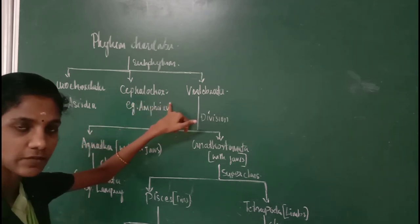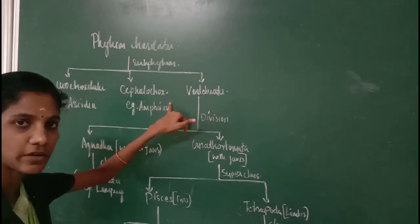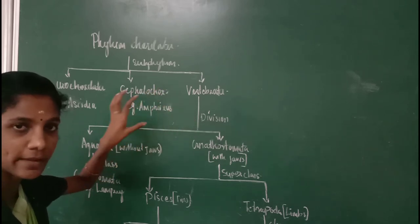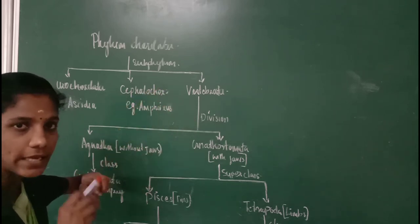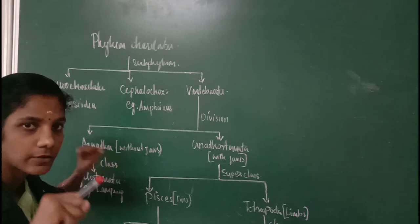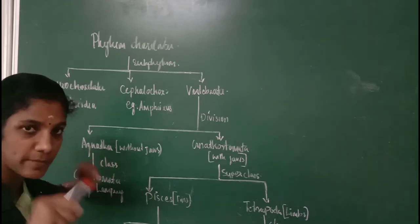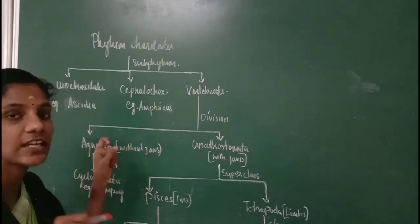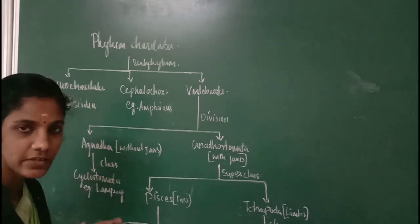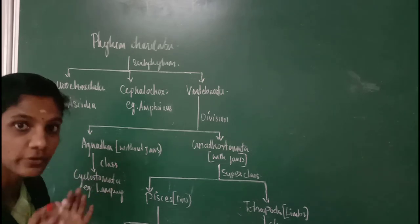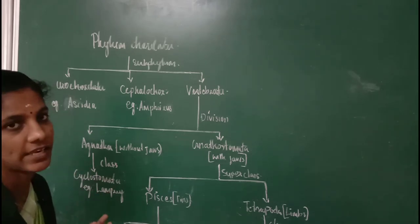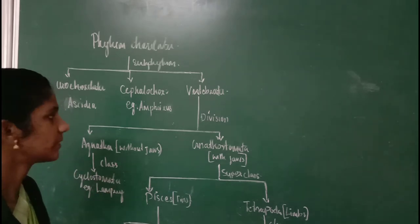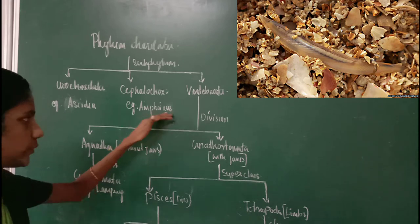Animals which belong to this phylum have an elongated notochord which extends from anterior to the posterior end of the body, and it persists throughout their lifetime. Example: Branchiostoma, also called Amphioxus — a marine primitive protochordate.